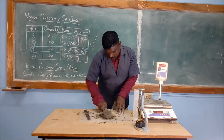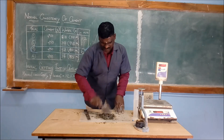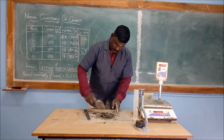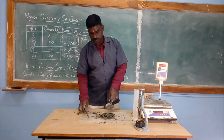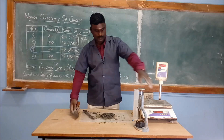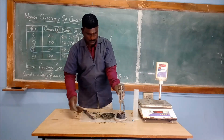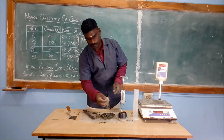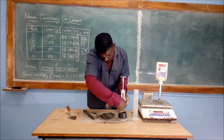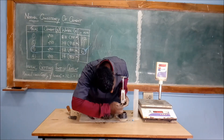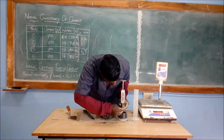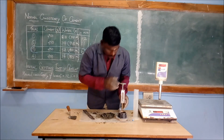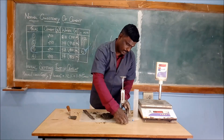The cement has been well mixed, and we should see that there are no lumps or particles present in the mix. Now we are going to take the Vicat apparatus. The plunger has been placed at the bottom of the Vicat apparatus and held on the top. Now the Vicat mould is removed.